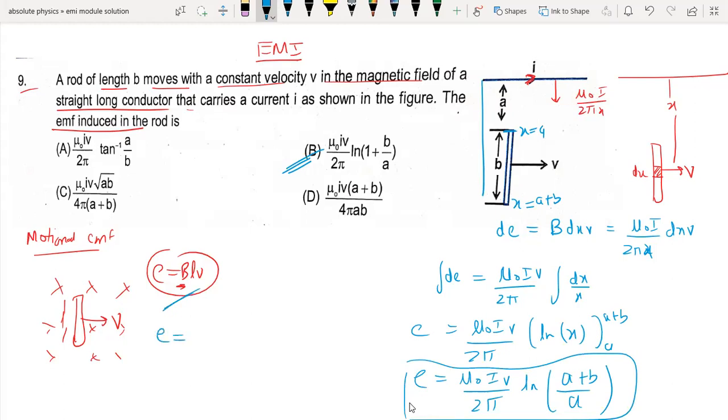We cannot use the formula v cross B dot dl because angles are different in different parts. We can use it if the angles between v and B are constant.